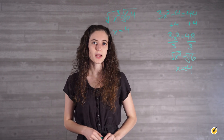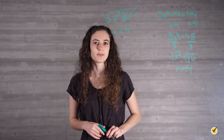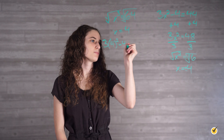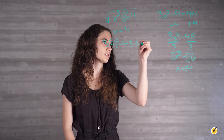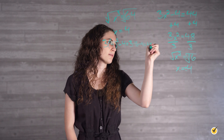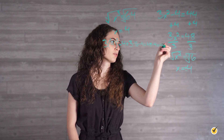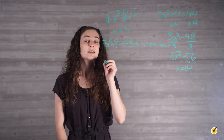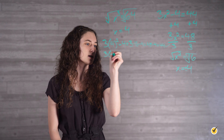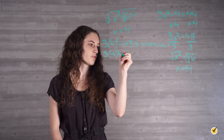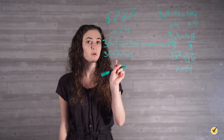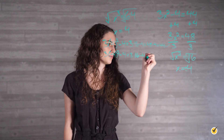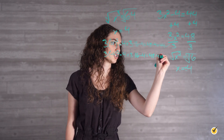We can check our answers by plugging them back into the original equation. We have 3 times 4 squared minus 4, which equals 3 times 16 minus 4, which is 48 minus 4, which gives us 44 — which is what we were looking for. That one works. Now let's try negative 4: 3 times negative 4 squared minus 4. That gives us 3 times negative 4 times negative 4, which is positive 16, minus 4 equals 48 minus 4, which is 44.